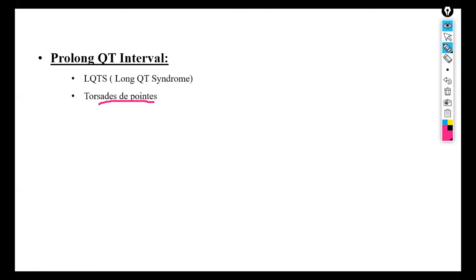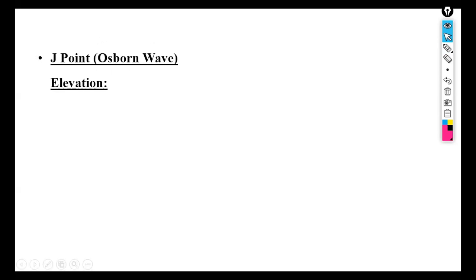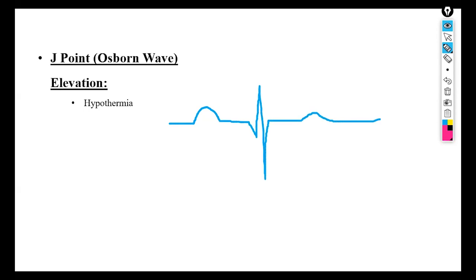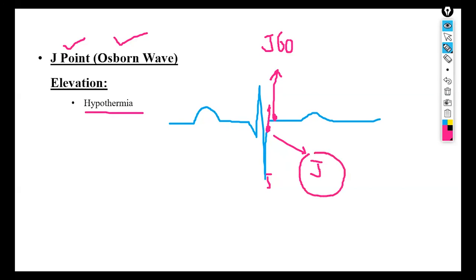The J point elevation is known as the Osborne wave, and it is because of hypothermia. On the ECG after the S wave, we identify the J point, followed by the J60 point. When the J point is elevated — forming the Osborne wave — the patient is likely suffering from hypothermia. The J point is where all electrical activity of the heart is neutral; when it rises, it indicates low body temperature.